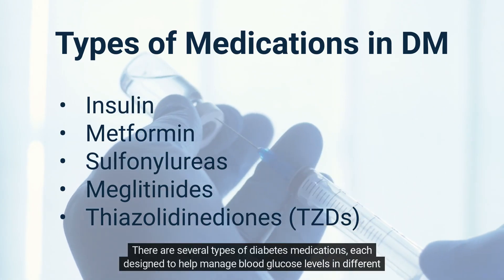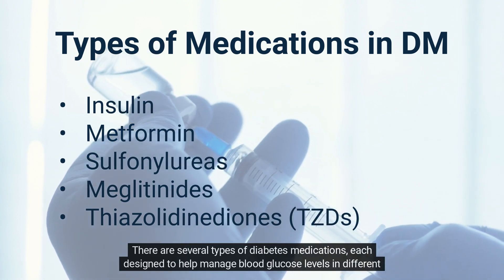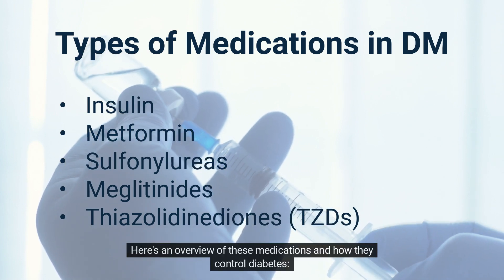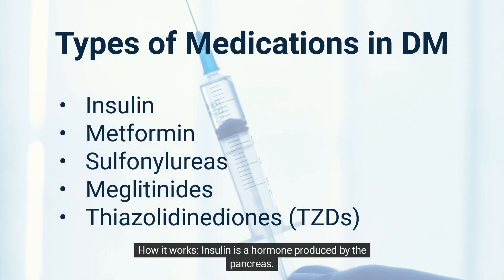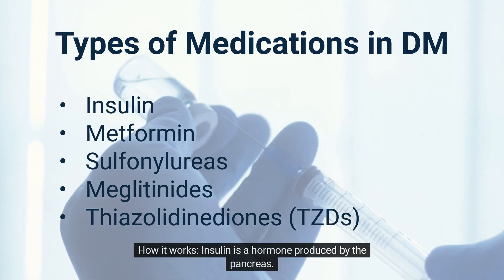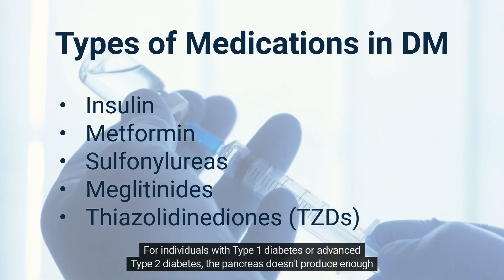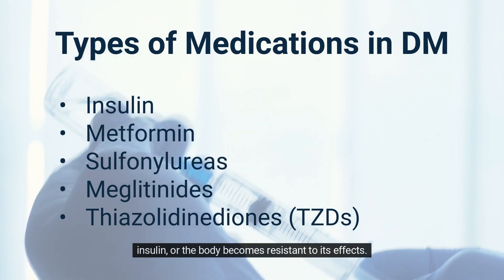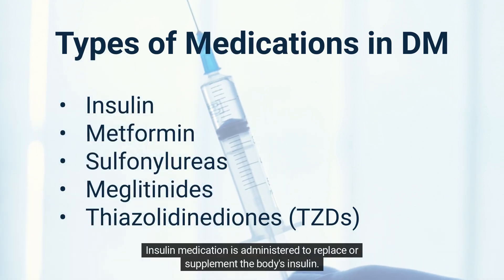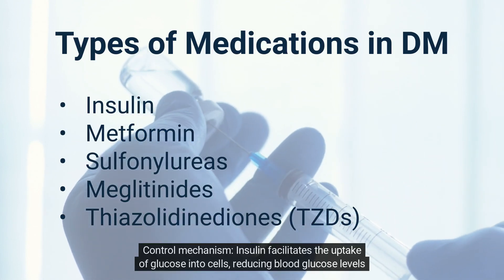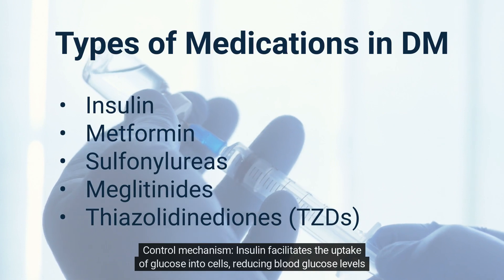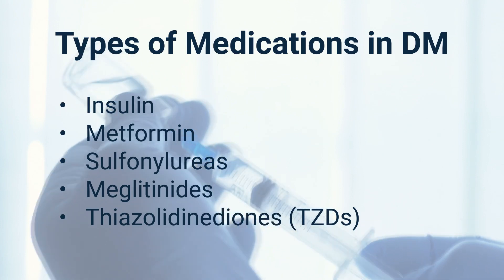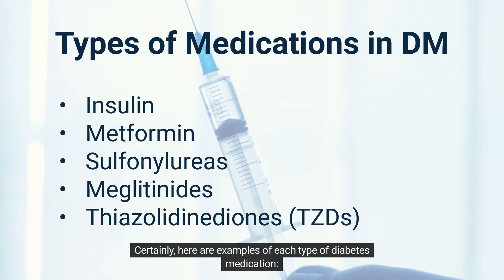There are several types of diabetes medications, each designed to help manage blood glucose levels in different ways. Insulin is a hormone produced by the pancreas. For individuals with type 1 diabetes or advanced type 2 diabetes, the pancreas doesn't produce enough insulin, or the body becomes resistant to its effects. Insulin medication is administered to replace or supplement the body's insulin, facilitating the uptake of glucose into cells and reducing blood glucose levels.